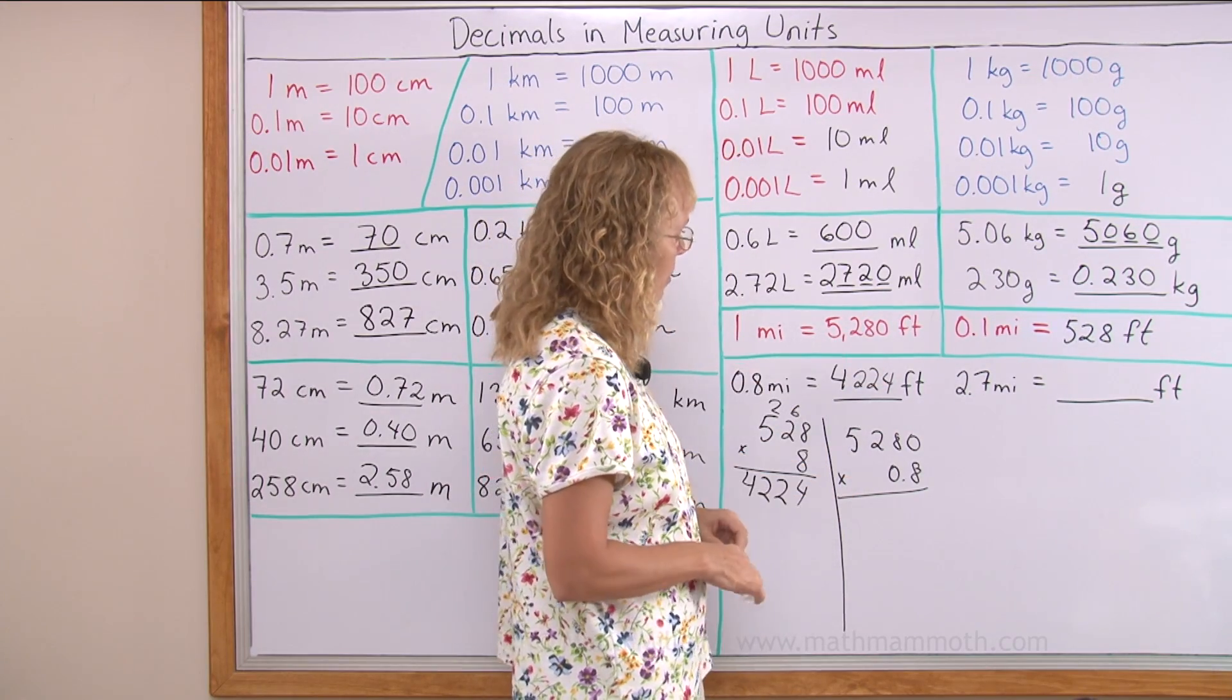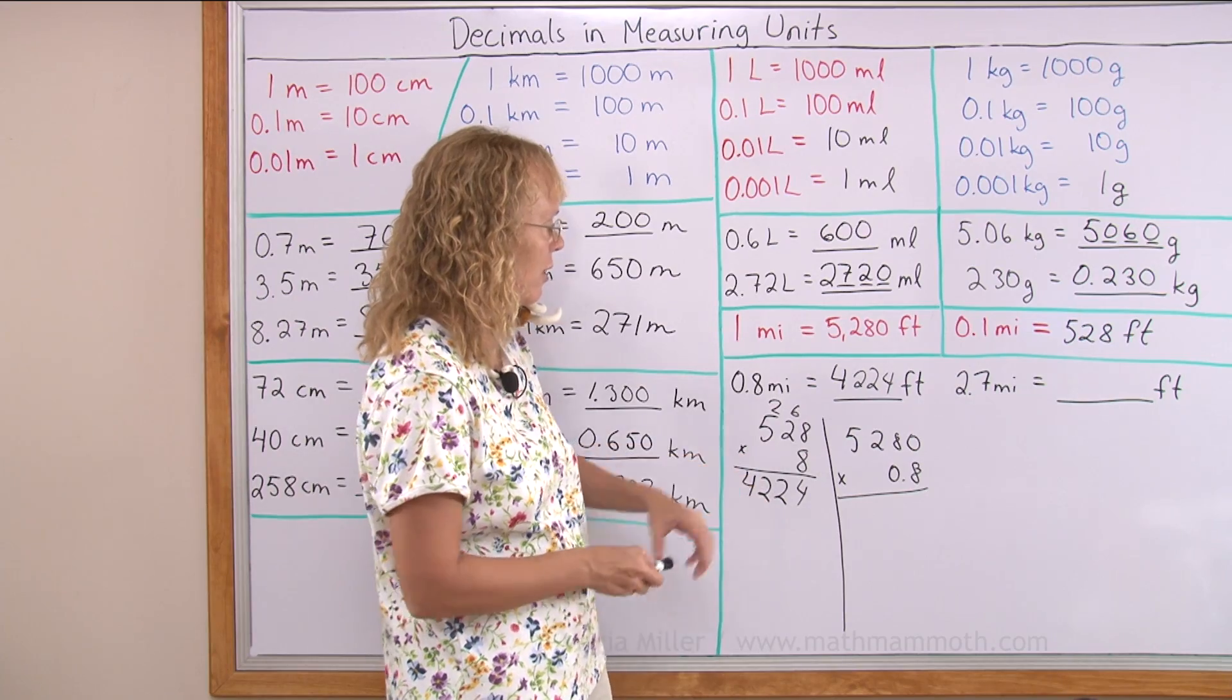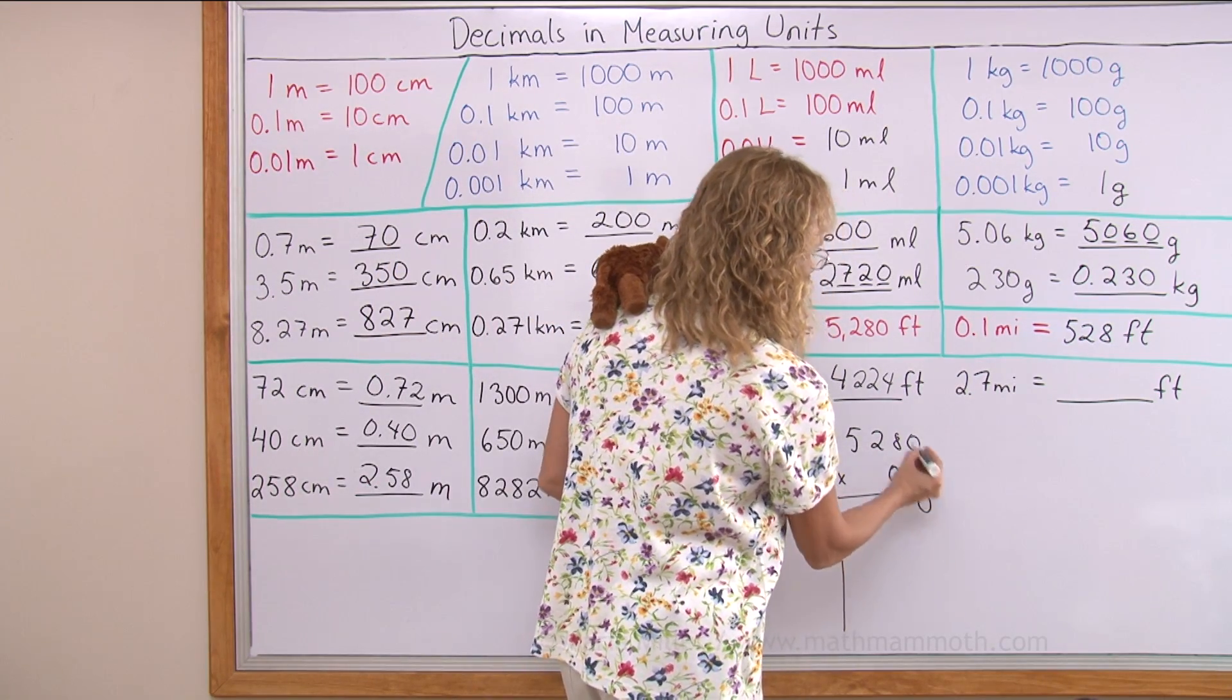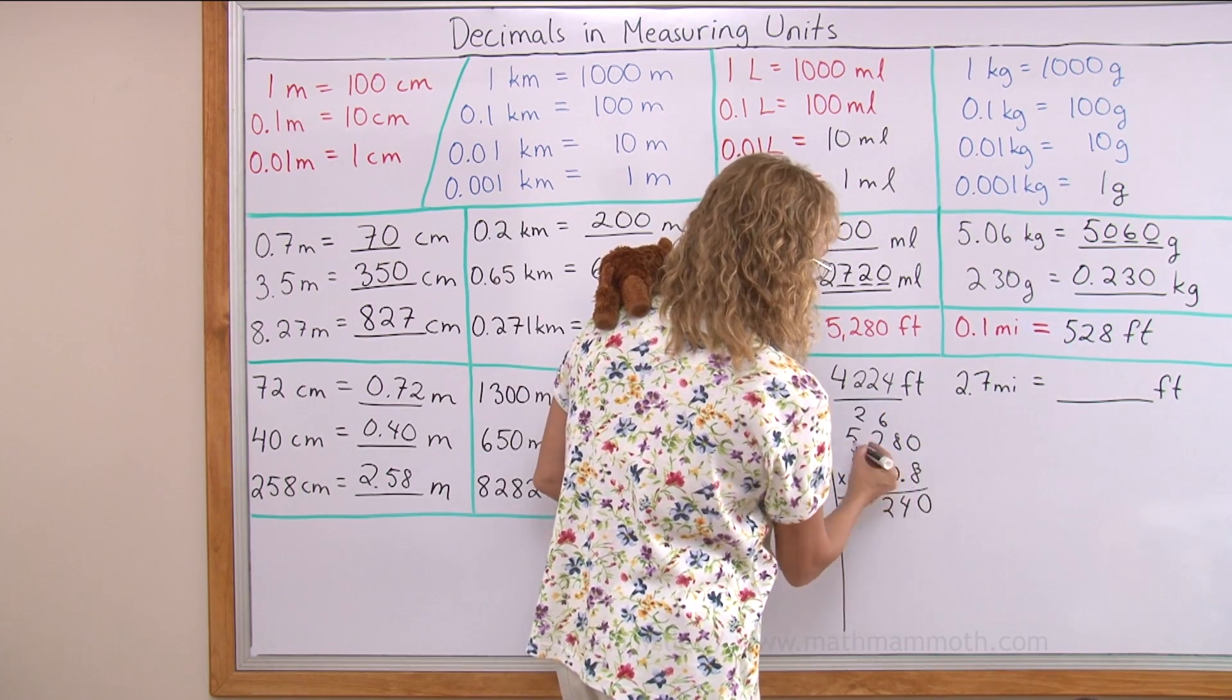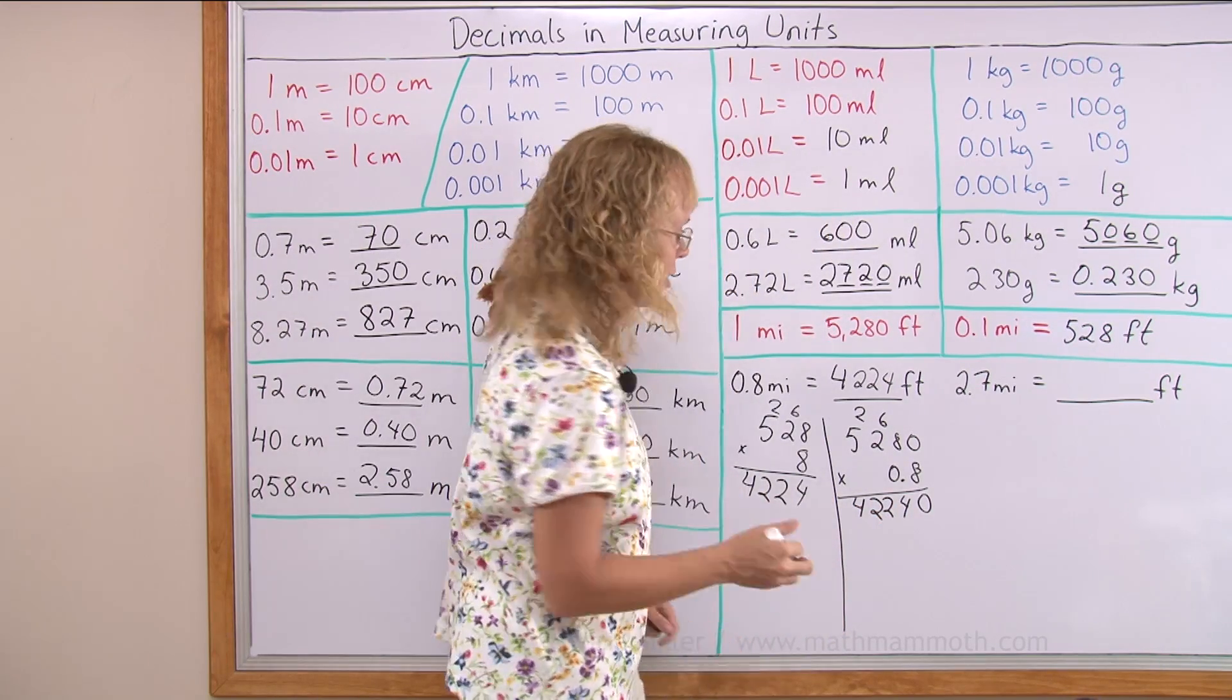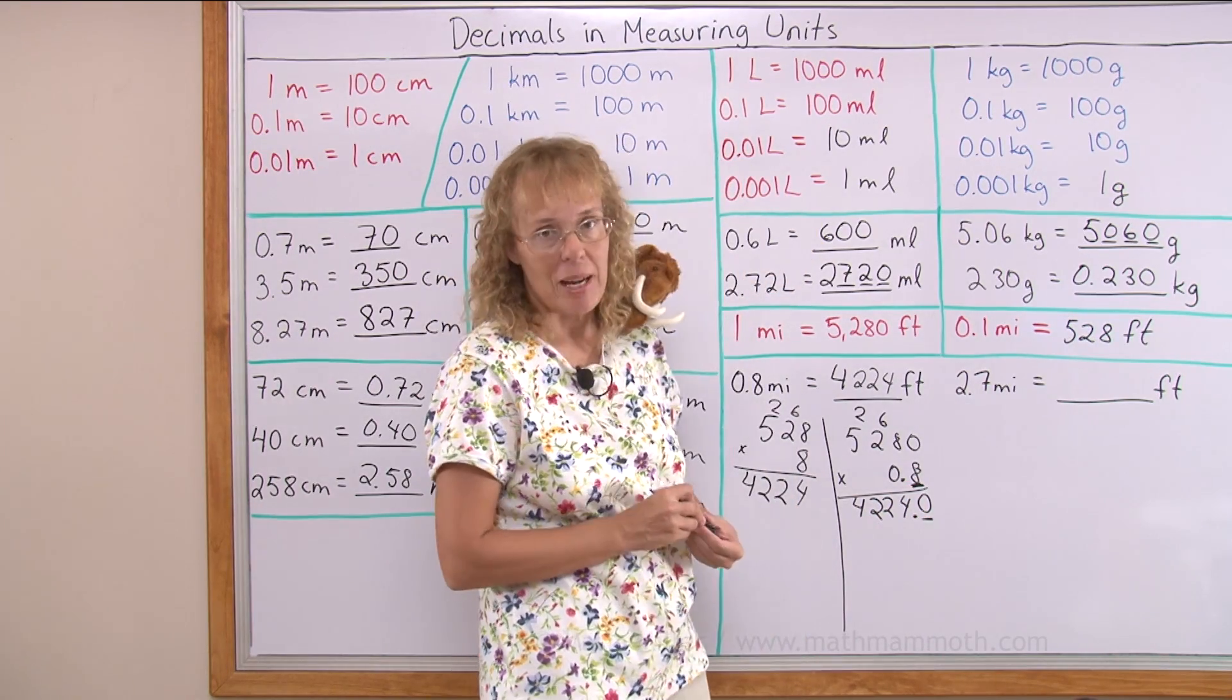That's how we can find how many feet it will be. 0.8 times the whole mile. But when you multiply here, there's a zero here that won't affect a thing. You end up doing the exact same calculations. 8 times 0, 0. 8 times 8, 64. Then 16 plus 6 is 22. And then 42. And then you need to put the decimal point in your answer because there's one decimal digit here. So that makes one decimal digit in the answer. You get the same answer.